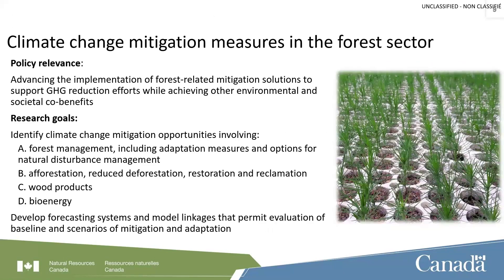The next theme deals with climate change mitigation measures in the forest sector — looking at how there can be a change in behavior or technology that can reduce emissions in the future, both in forest ecosystems and through wood use and substitution benefits. In terms of policy relevance, climate change mitigation is all about supporting GHG reduction efforts while trying to achieve environmental and societal co-benefits. The goal of mitigation is really to ask the 'what if' questions: what if we were to change what we're doing in the future, and what would the carbon implications be? We're trying to identify climate change mitigation opportunities in forest management, including natural disturbance management, forest conversion, and the use of wood products and bioenergy.